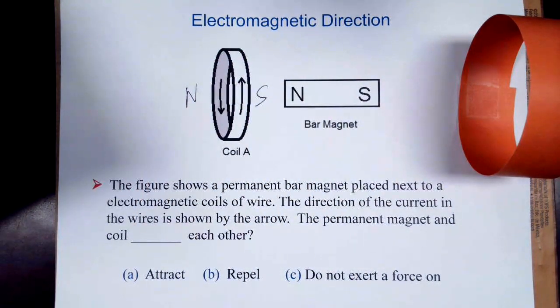If that's true, then we know that the electromagnet and the permanent magnet are going to attract each other.